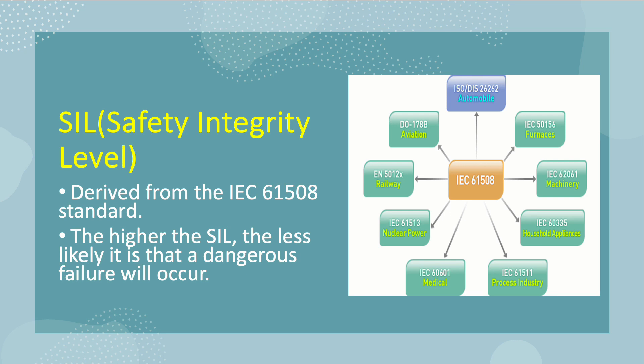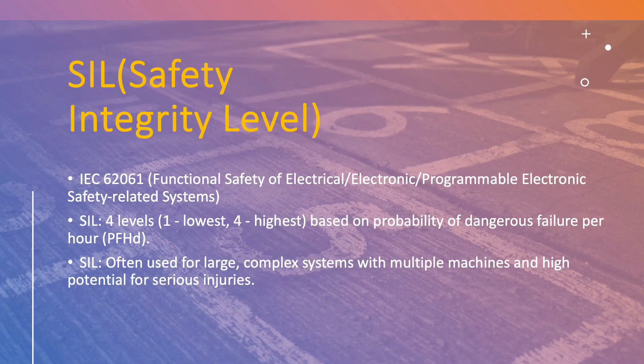A higher level of SIL means higher safety. IEC 61508 is primarily applicable to electrical, electronic, and programmable electronic safety-related systems across various industries. SIL — safety integrity level — mainly focuses on the probability of dangerous failure per hour of a safety function, emphasizing reliability and preventing harm from unintended system behavior.